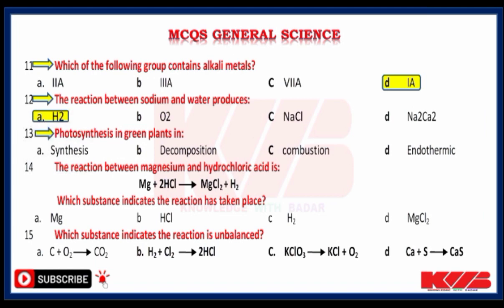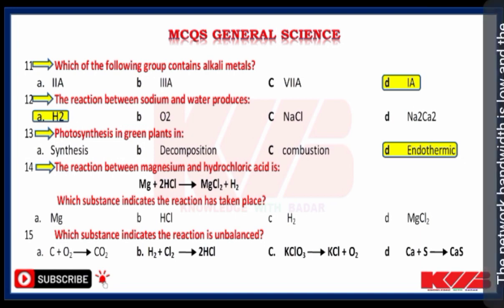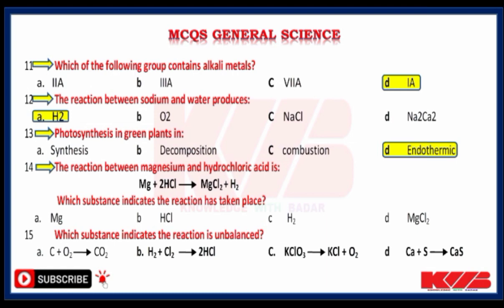Photosynthesis in green plants is an endothermic reaction. The reaction between magnesium and hydrochloric acid is Mg + 2HCl → MgCl2 + H2. Which substance indicates the reaction has taken place? Magnesium, hydrochloric acid, hydrogen or magnesium chloride? Yes, hydrogen. Which substance indicates the reaction is unbalanced? A: C + O2 → CO2, B: H2 + Cl2 → 2HCl, C: KClO3 → KCl + O2, D: Ca + S → CaS. The correct answer is KClO3 → KCl + O2.